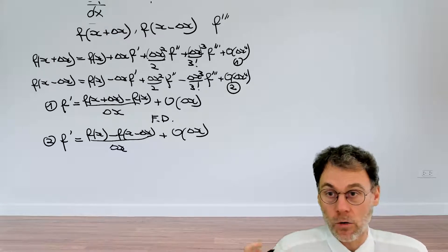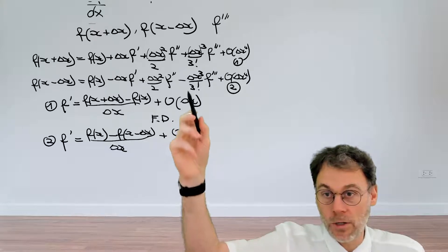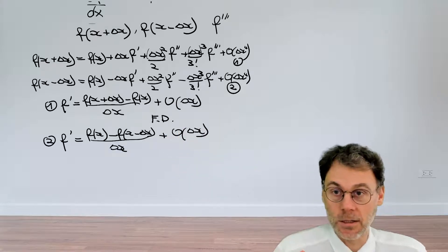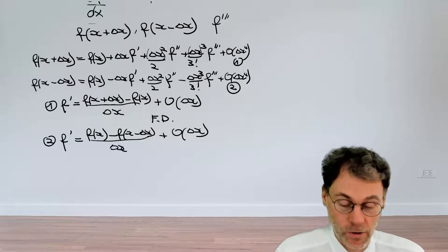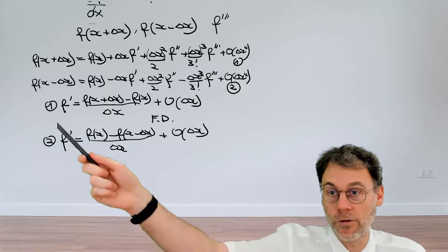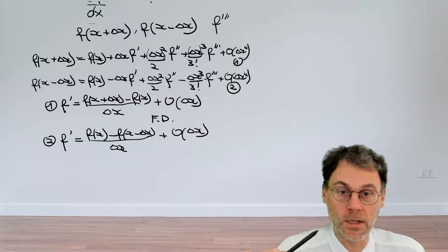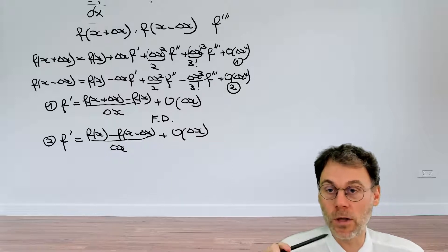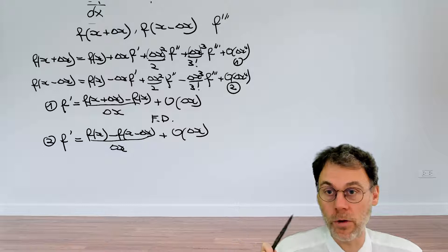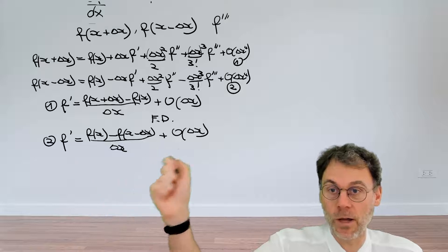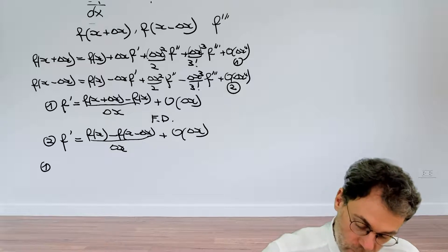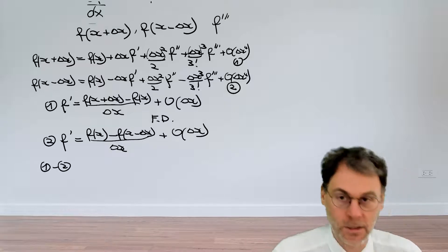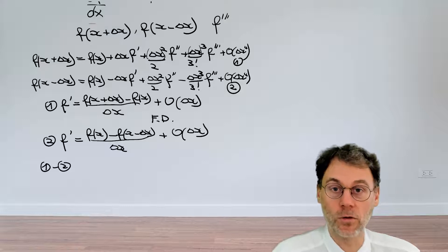The approximation error scales linearly as Δx. The question is: can we do something clever to get a more accurate approximation? So far we've used either equation 1 or equation 2 alone. Pause the video and see if you can get another approximation of f prime by subtracting equation 2 from equation 1 — what happens with equation 1 minus equation 2?